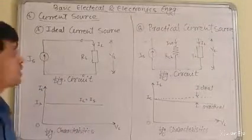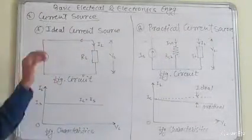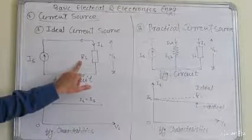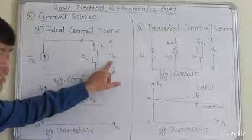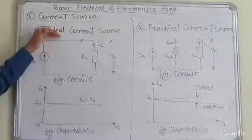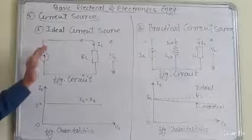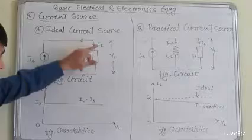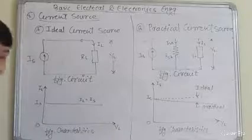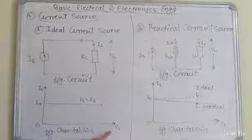Now we will see the current source. Current source also has two types: ideal current source and practical current source. In the ideal current source, Is is the source current, RL is the load resistance, Vl is the voltage across load resistance, and Il is the current through the load resistance. In the ideal current source, the source current appears through the load resistance — Il is equal to Is — and it does not depend upon the load voltage.